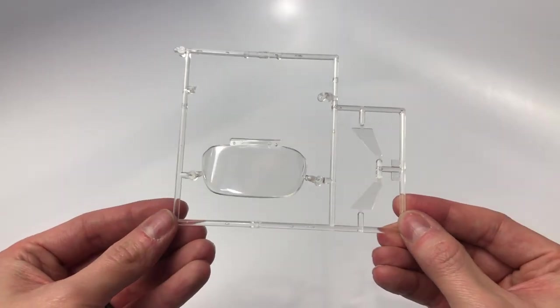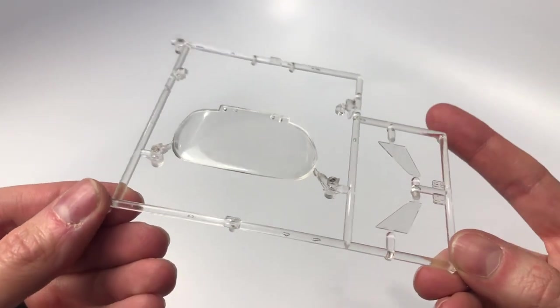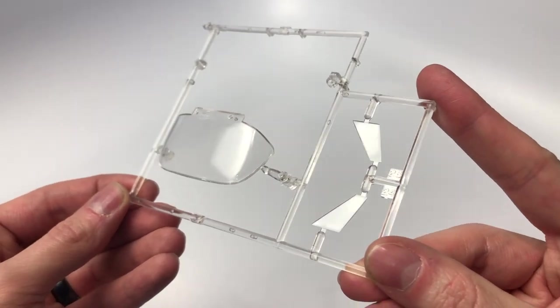Here is our first clear sprue that has the side window vents along with the rear window if you choose to have the convertible top open.